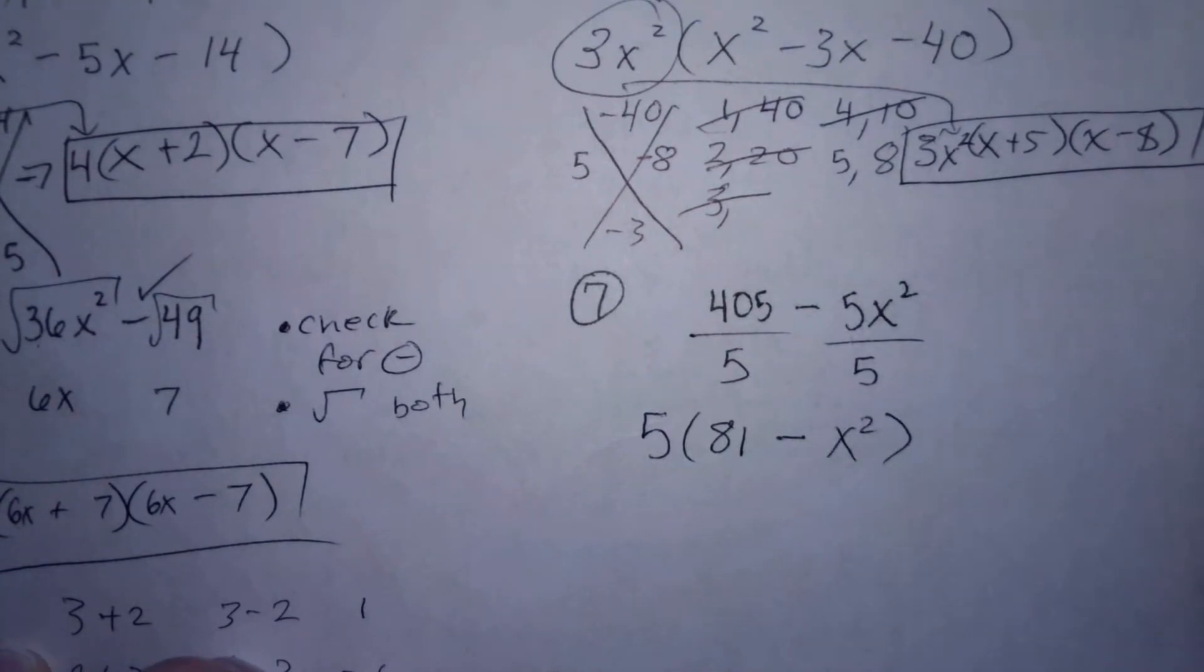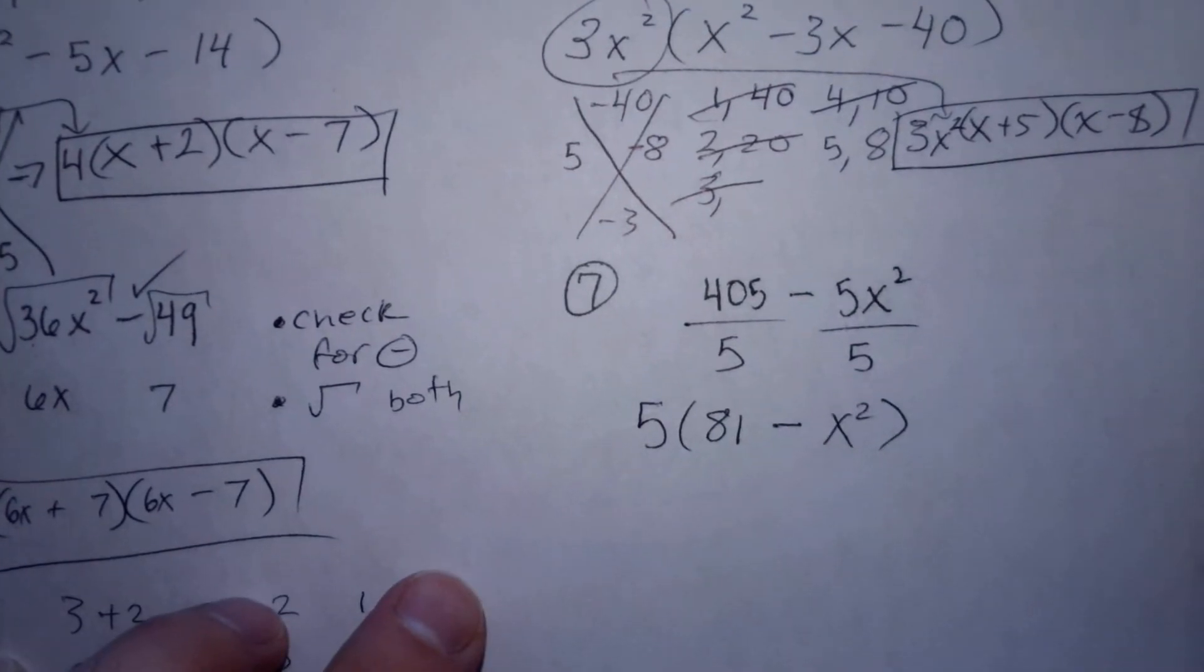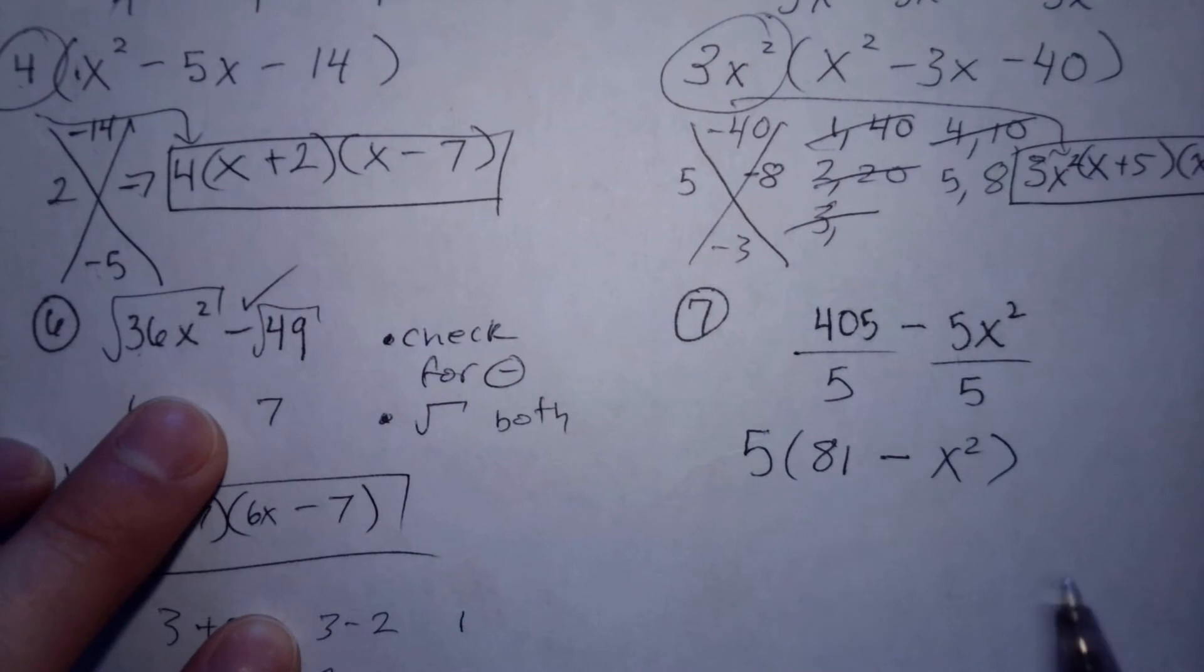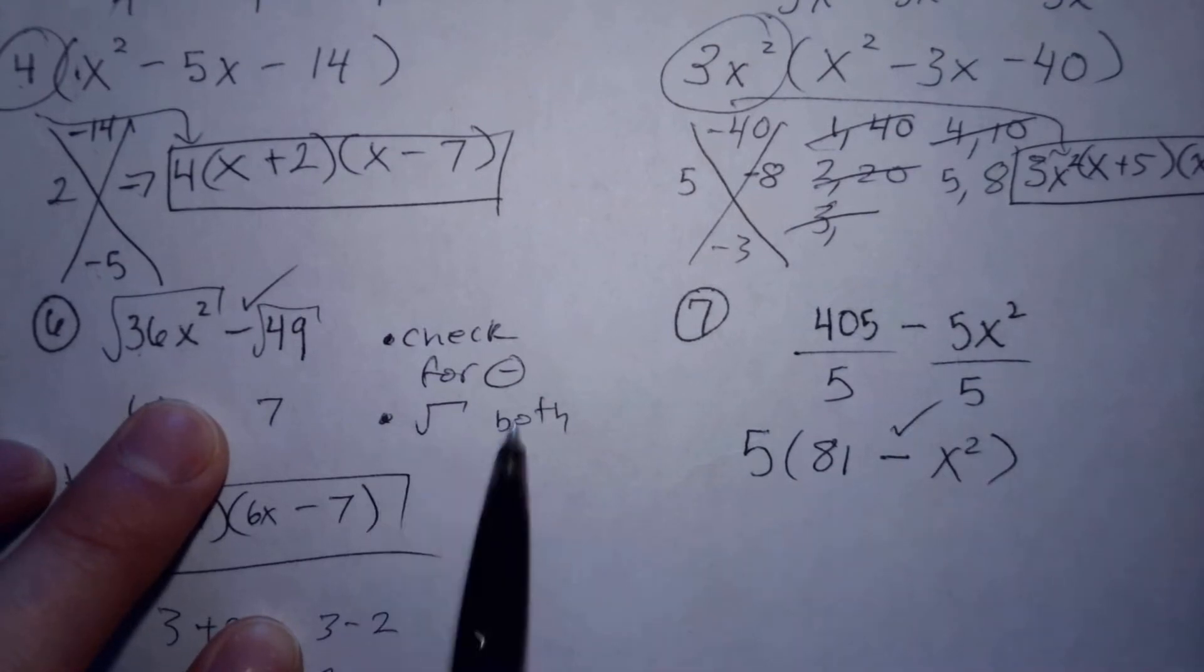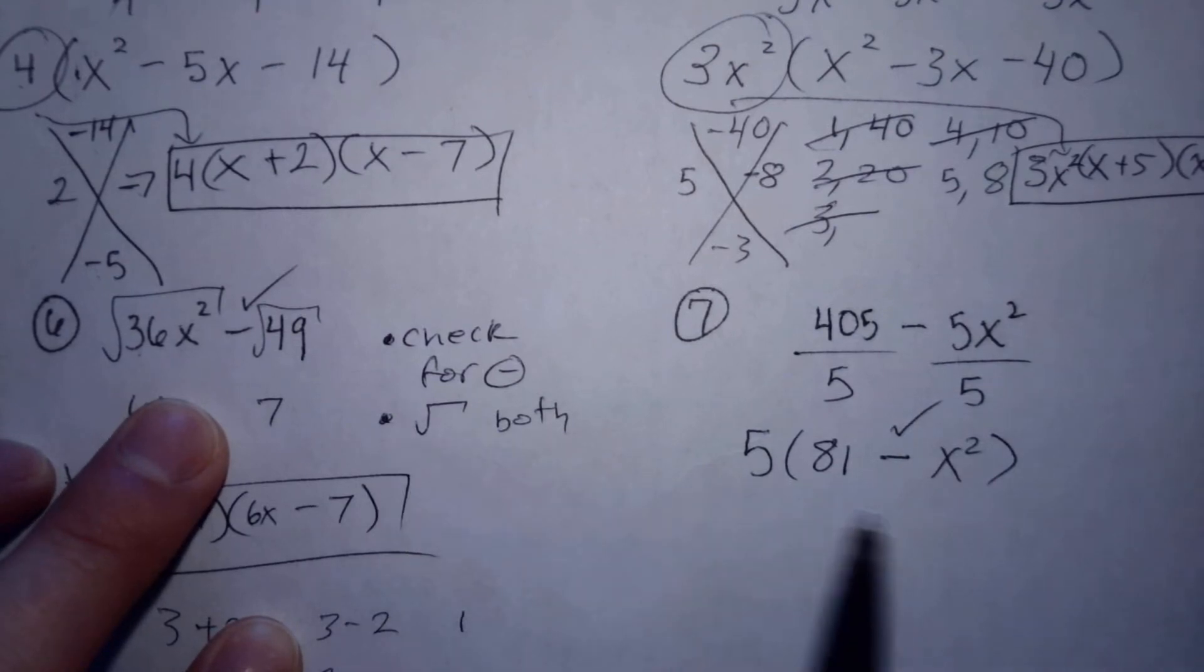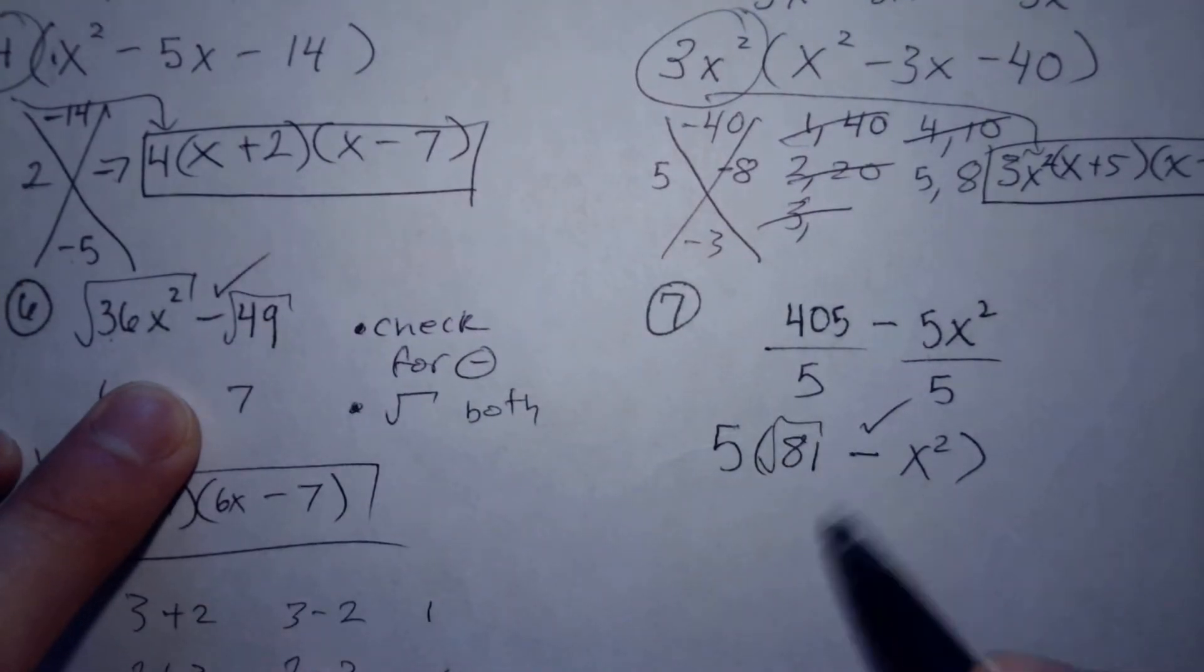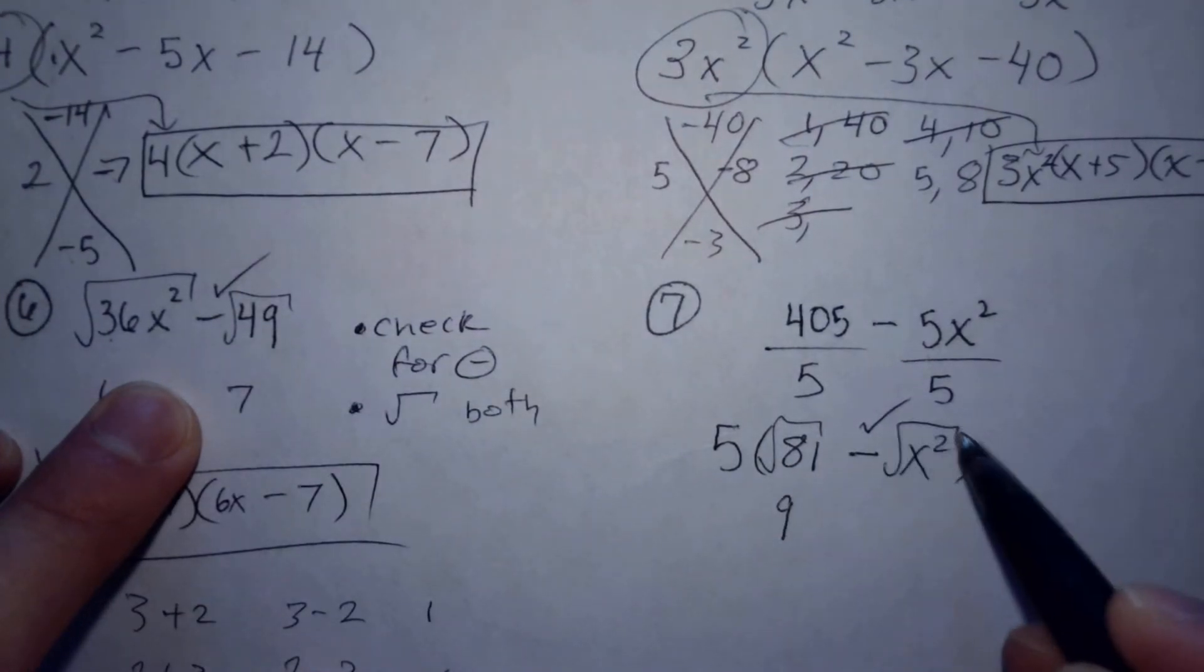So I can't divide anything else out, already divided by the greatest common factor. We can't forget to bring this down at the very end. But again, I'm going to check for minus, which I do have, and see if I can square root both. And I can. The square root of 81 is 9, the square root of x squared is x.